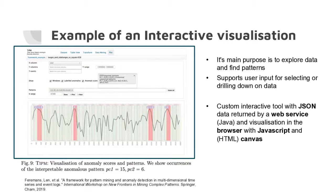Here's an example of an interactive visualization — a tool I created a couple of years ago. It shows a time series, and it's a tool for anomaly detection. The red bars indicate segments of the time series considered to be anomalous. You have different options to filter the data, show the anomaly score of some methods, select different y-columns if you have a multivariate time series, and filter on start and end date. The main purpose is really to explore the data.